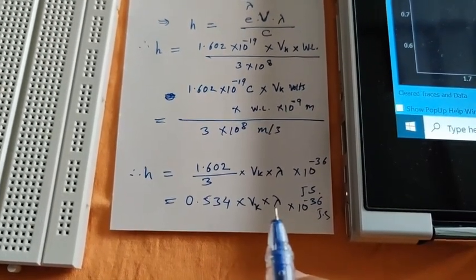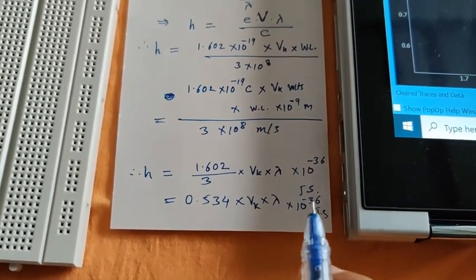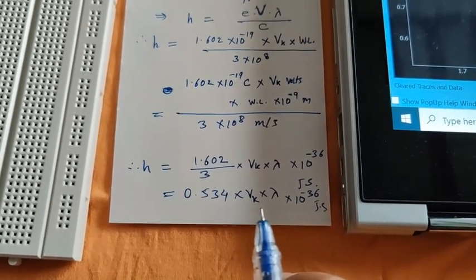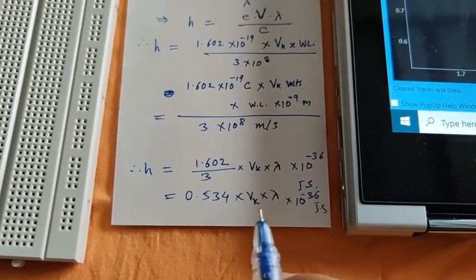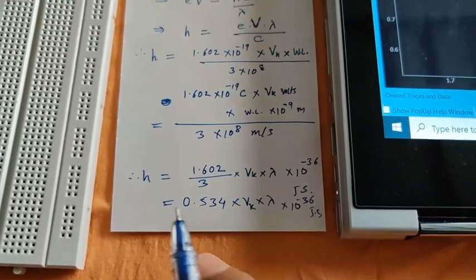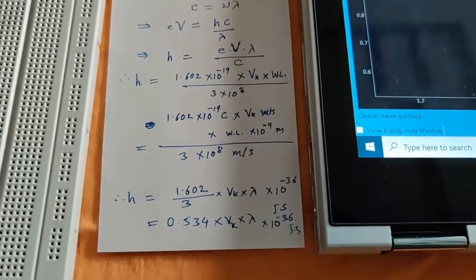By knowing these two values—threshold voltage or knee voltage and λ of that radiation—we can very easily calculate Planck's constant.